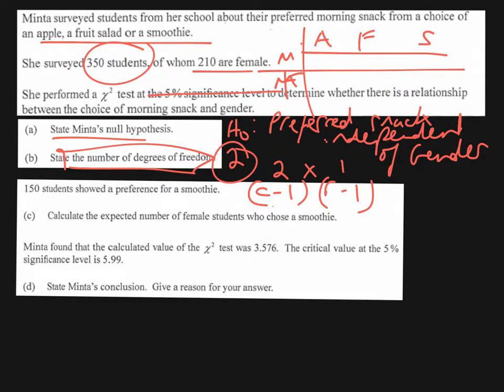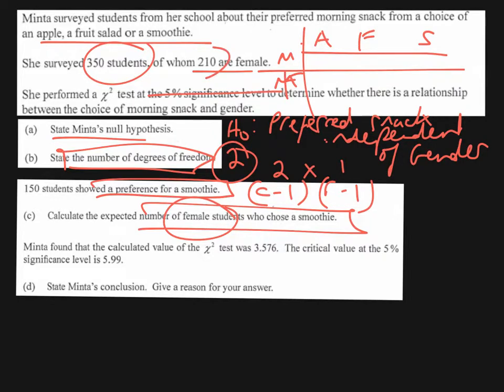We are then told that 150 students showed a preference for a smoothie, and we're asked to calculate the expected number of female students who chose a smoothie. In order to work this out, what we want to do is say, we've got these 350 students. First of all, what's the proportion of the students that are female? The proportion is 210 of those 350 students are female.